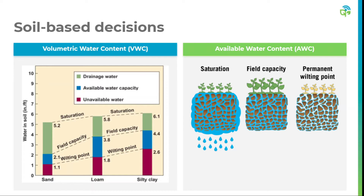Moving on to a discussion of soil-based approaches to irrigation scheduling — whether you're using your hands to assess soil moisture or you have probes in the ground connected to data loggers, there's a lot of room for error when it comes to interpreting soil moisture data. Many commercially available probes provide soil moisture data in terms of volumetric water content, or VWC. The problem with VWC has to do with soil type and specifically soil texture. For example, a sandy soil with a VWC of 20% will not have the same available water content as a heavy clay soil with a VWC of 20%, making it very complicated to use VWC as an actionable decision point for triggering irrigation.